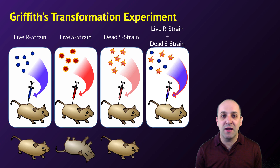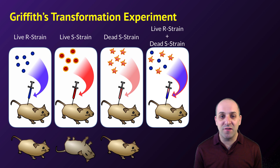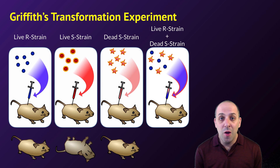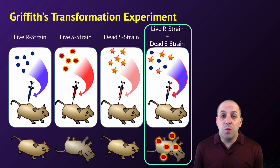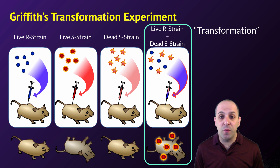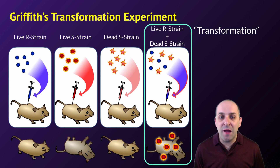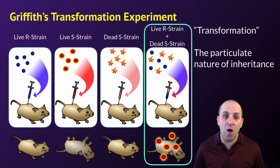But then Griffith did something interesting. He injected live R strain bacteria and dead heat-killed S strain bacteria. Based on previous results, you would expect the mice to survive, because live R strain doesn't kill mice and dead S strain doesn't kill mice. But surprisingly, these mice died. When Griffith necropsied these mice, he was able to isolate living S strain bacteria, which was not something he had injected. His main conclusion was that some sort of transformation occurred, causing the R strain to become S strain bacteria, establishing the notion of a particulate nature of inheritance.